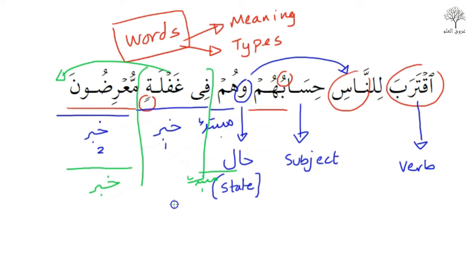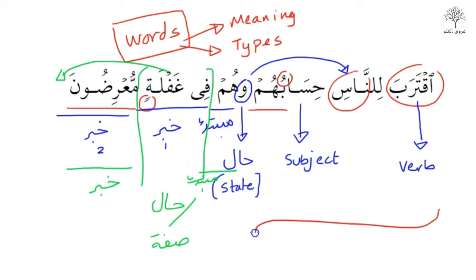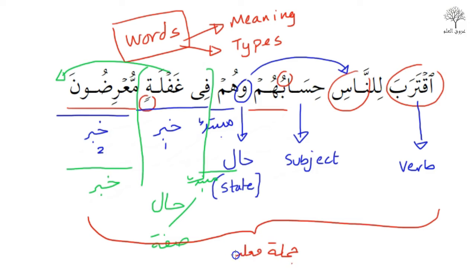Another possibility is also that it becomes the sifa. If it was connected to the word after it — mu'ridoon — that was another possibility of what it could have become. All of this sentence we break down into all these little sections. This is what we call the tarkib. The whole sentence itself is what we call a jumlah fi'liyyah — a verb-based sentence.